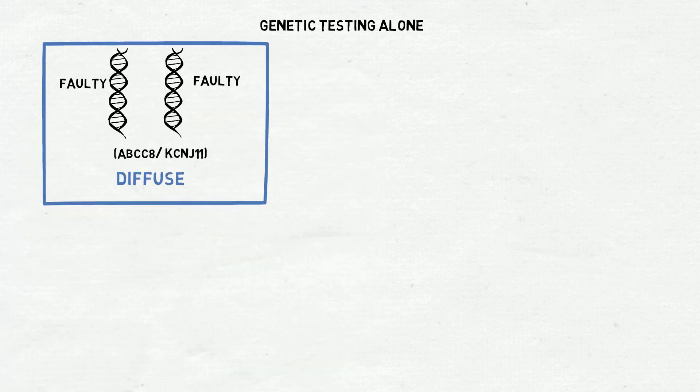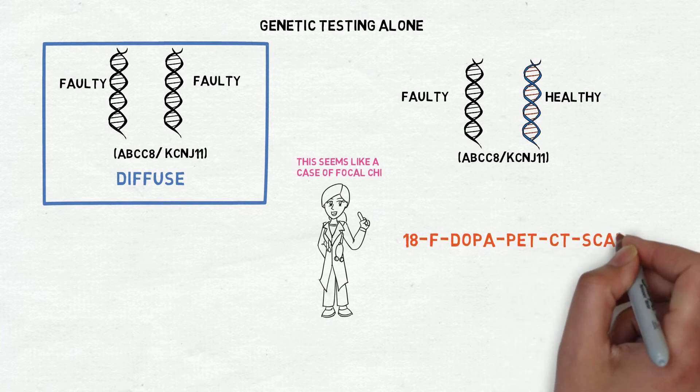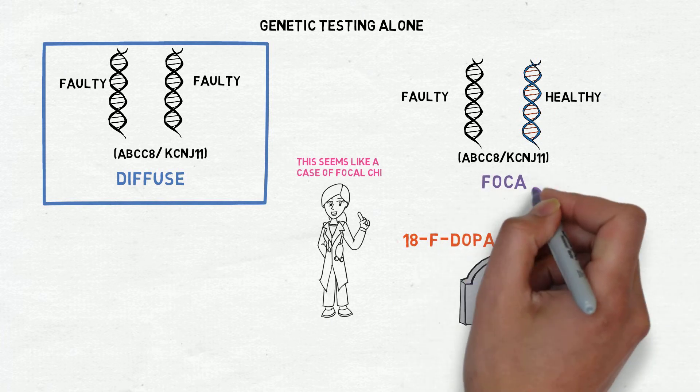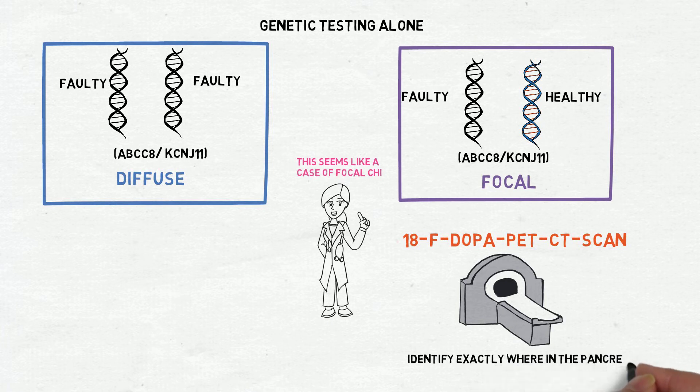Whereas, if a patient is suspected to have focal CHI because only one copy of the gene is faulty, an 18F DOPA PET-CT scan is performed to confirm this and identify exactly where in the pancreas the excess insulin is being made.